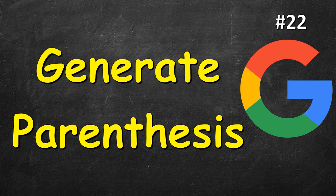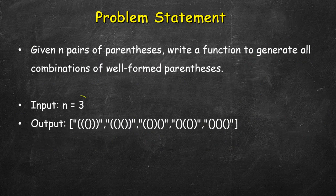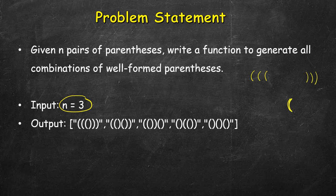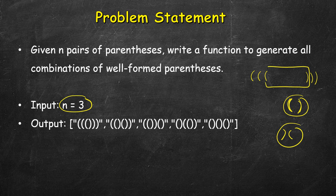In this video we have to generate all the possible valid parentheses with a given length. We are given input n, which is 3 in this case, so we have to generate all the valid parentheses that can be formed using three open and three closing parentheses. A parentheses is considered valid if there is an opening parentheses followed by a closing parentheses. We can also have nested parentheses. With n=3, there are five possible combinations.